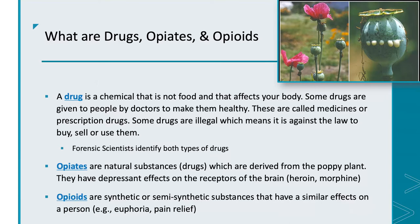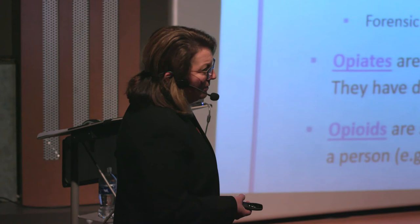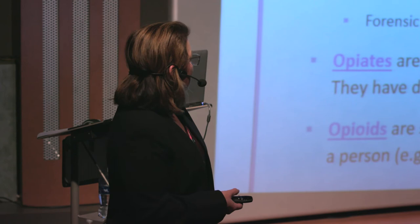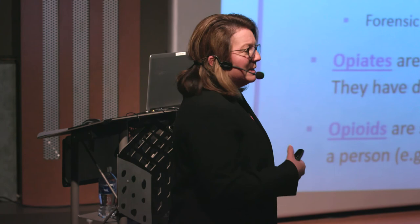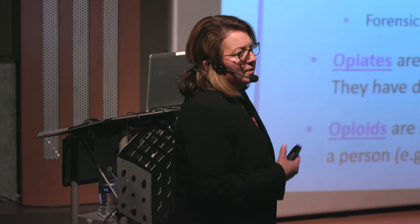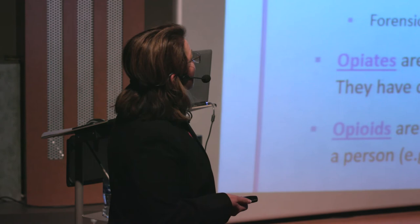Opiates such as morphine and codeine are given by prescription, while others like heroin are illegal. In addition to these natural substances, we have opioids — synthetic or semi-synthetic drugs that we humans make to mimic the effects of opiates. Even in my state of North Carolina, illegal poppies were recently found and local authorities had to remove them.